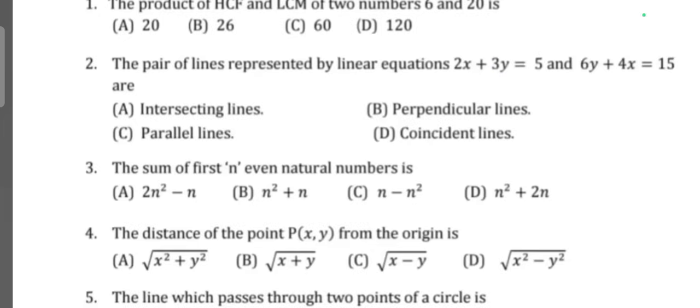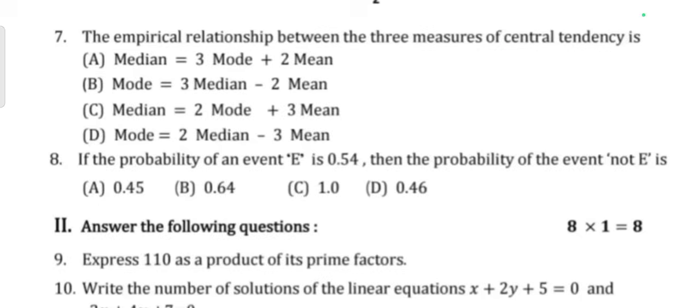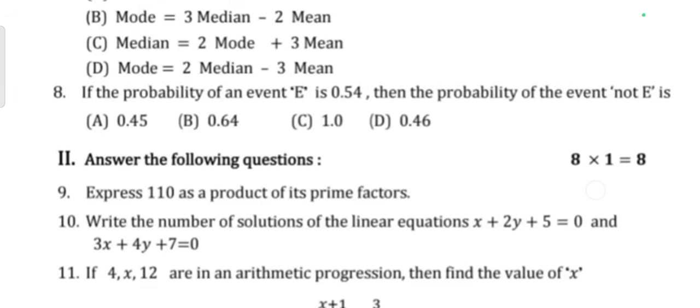The sum of first n even natural numbers is. Question 4: The distance of point P of x comma y from the origin is. The line which passes through two points of a circle is. The formula to find the volume of a sphere is. The empirical relationship between the three measures of central tendency is. If the probability of an event E is 0.54, then the probability of event not E is.